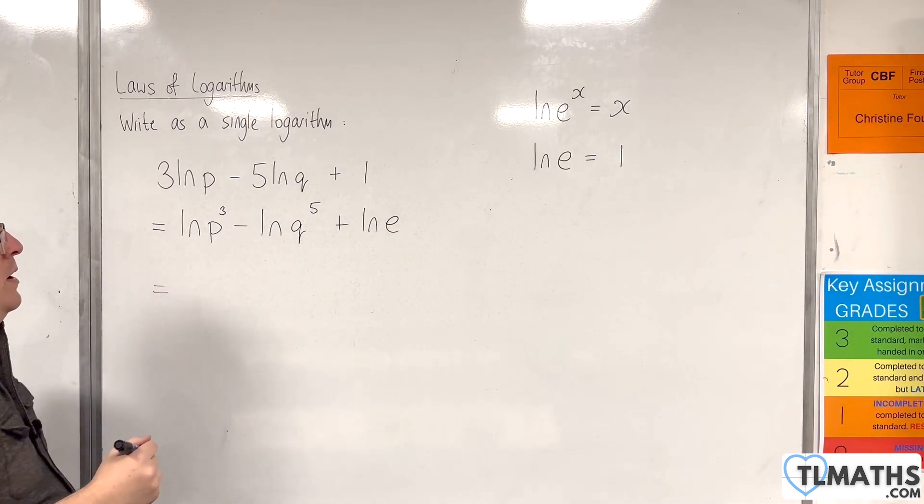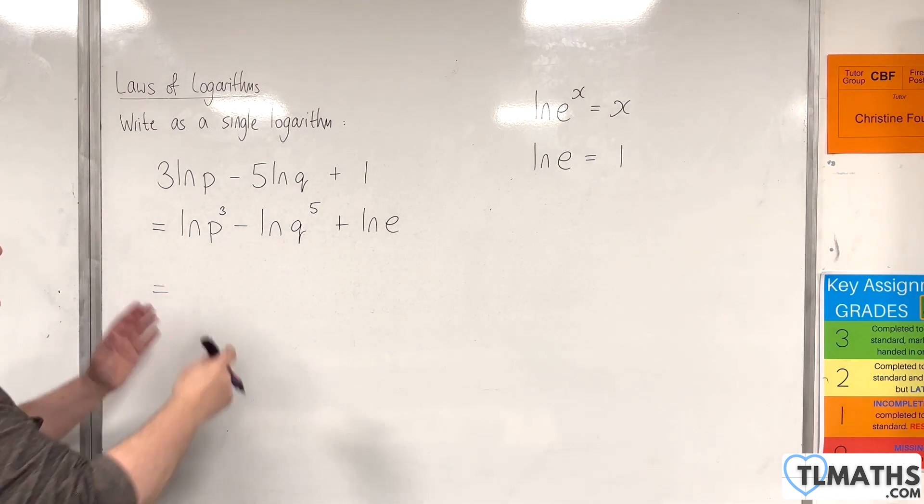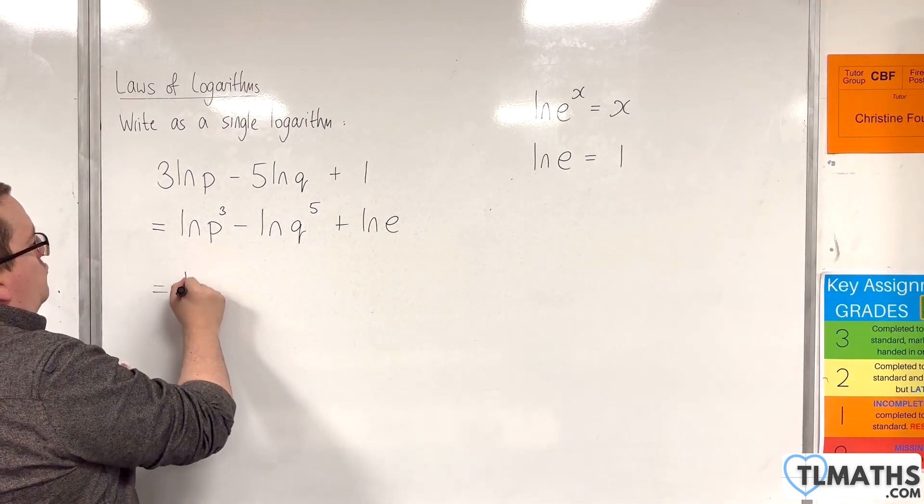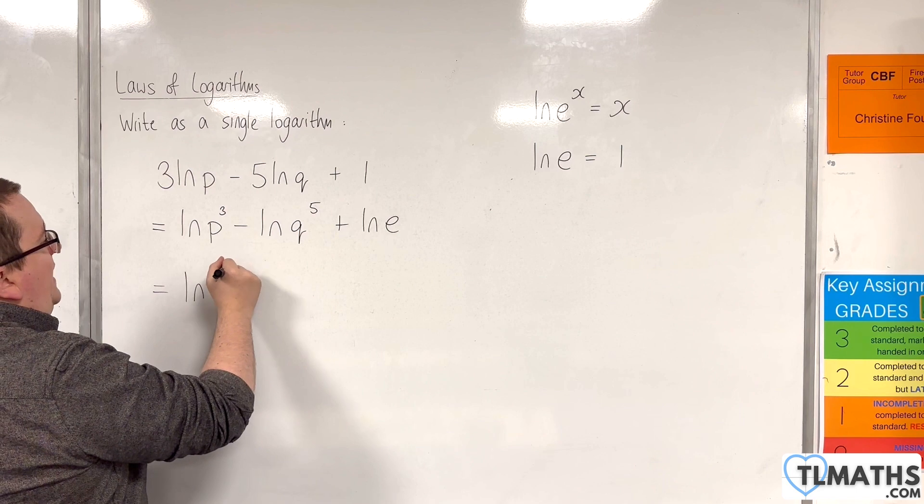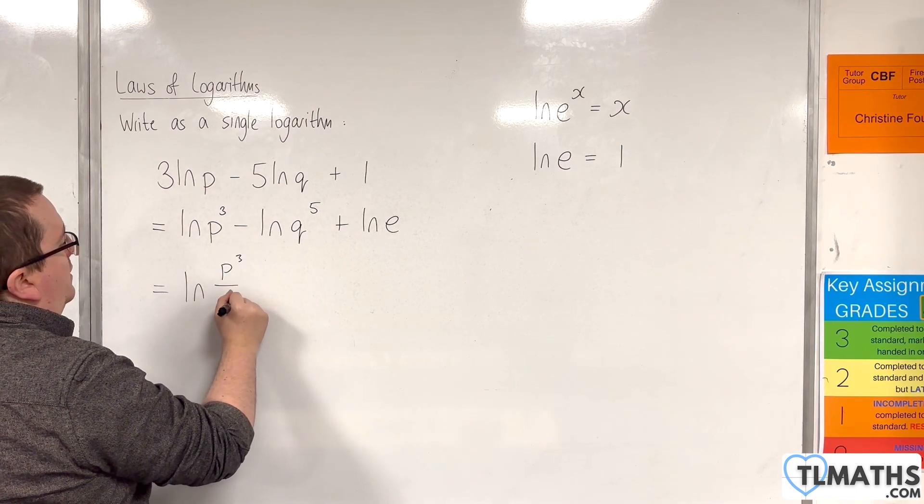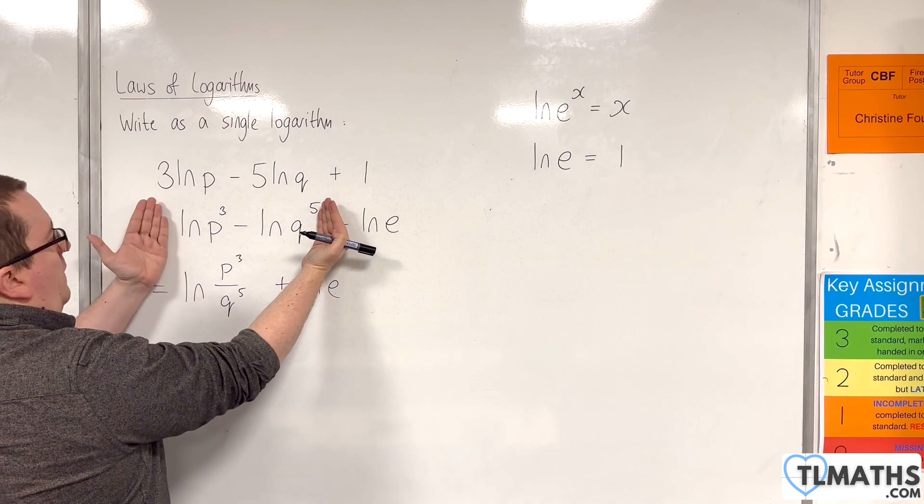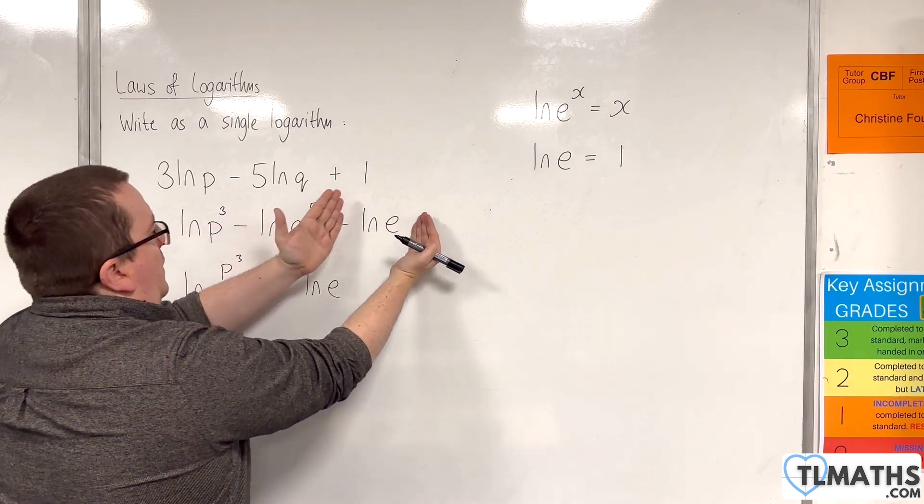So now to combine this into a single logarithm, work from left to right, let's deal with the first two terms. We can write that as log of p cubed over q to the 5. So using the quotient rule on that, and we've still got the log e there.